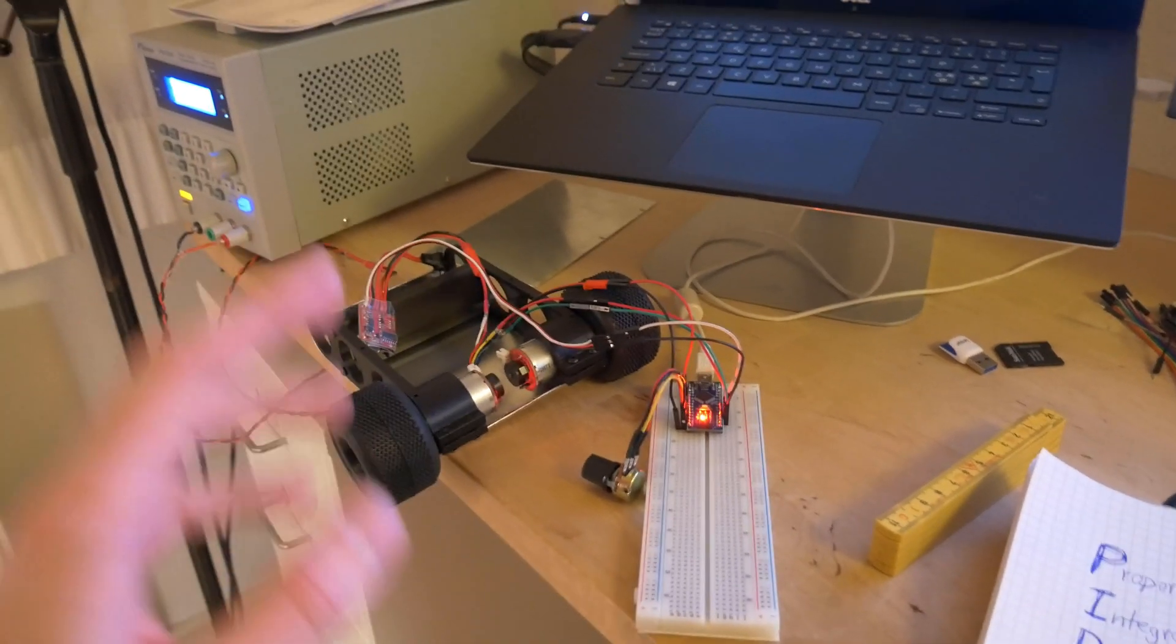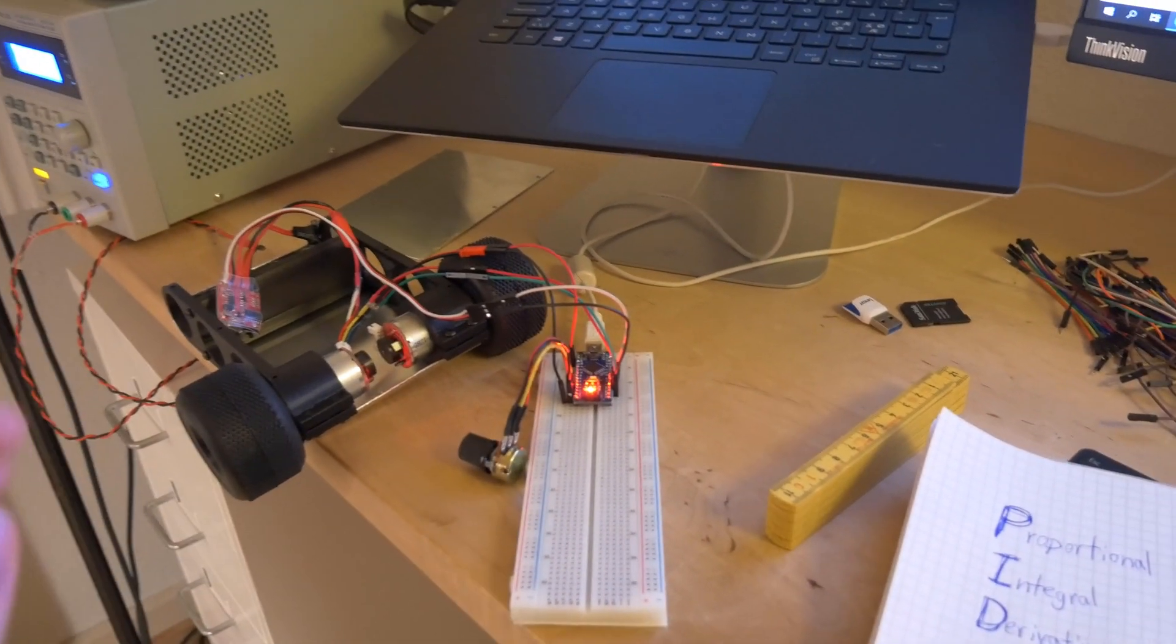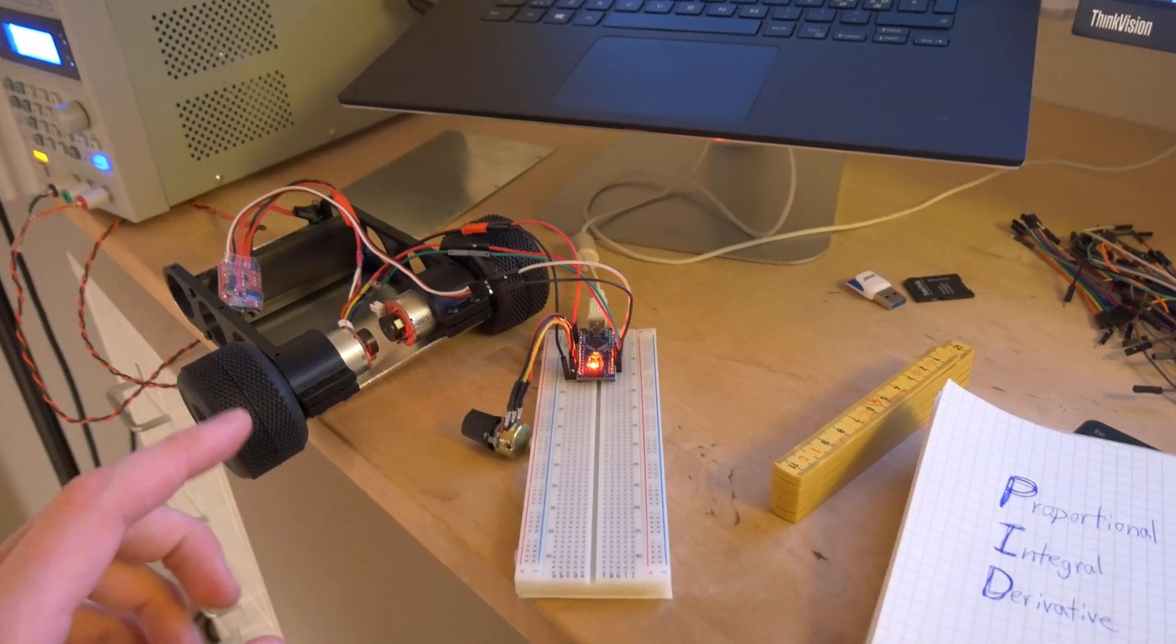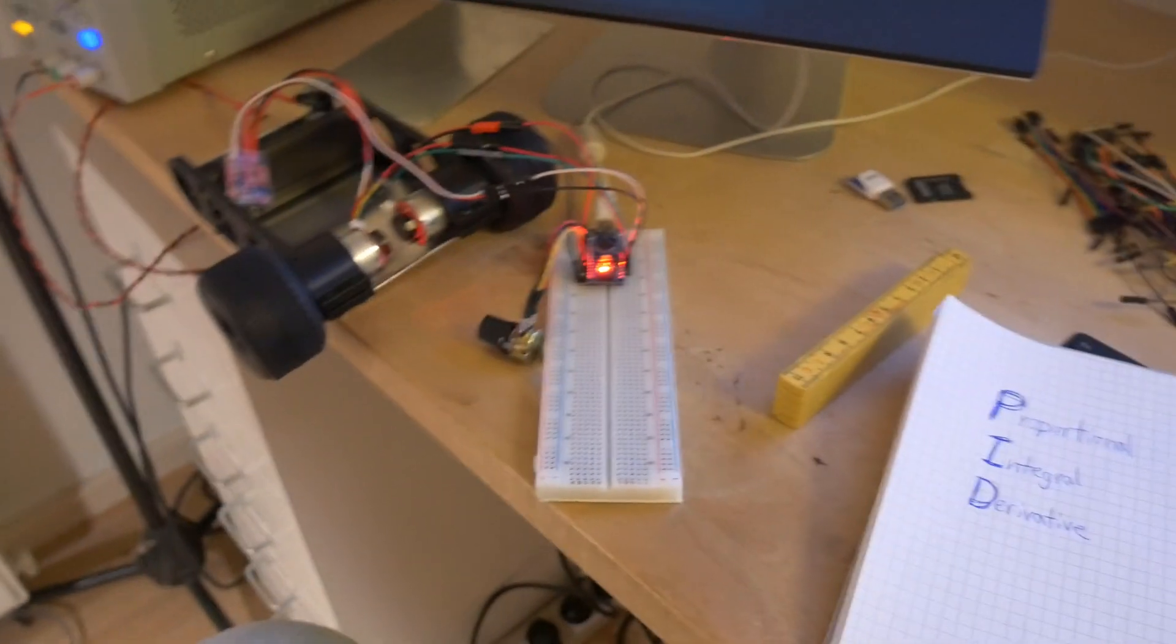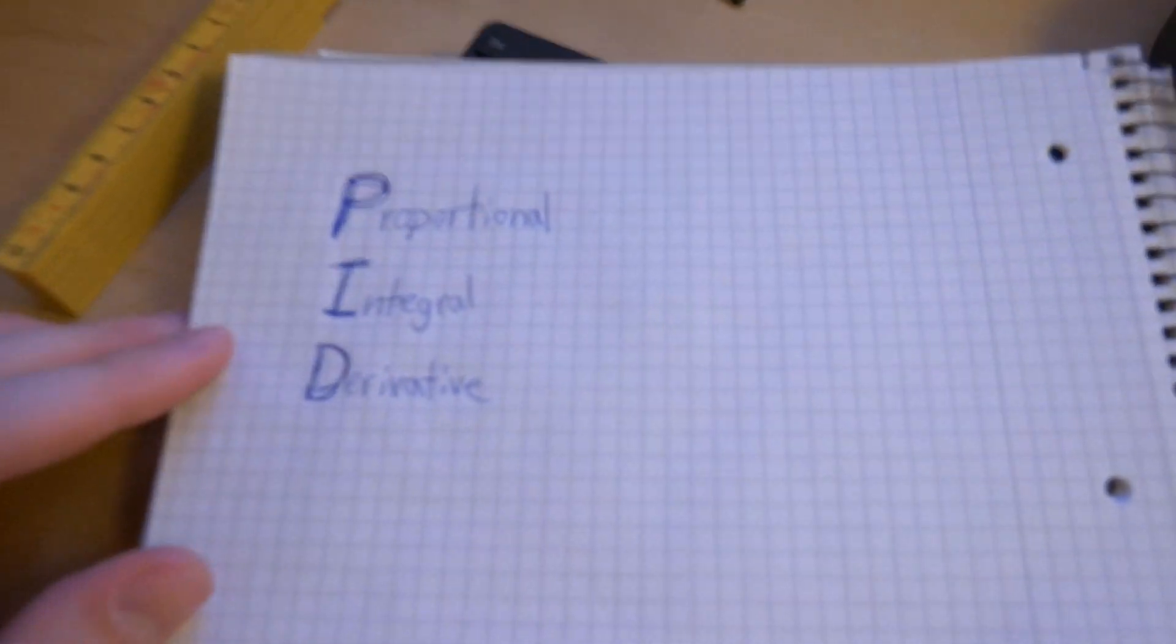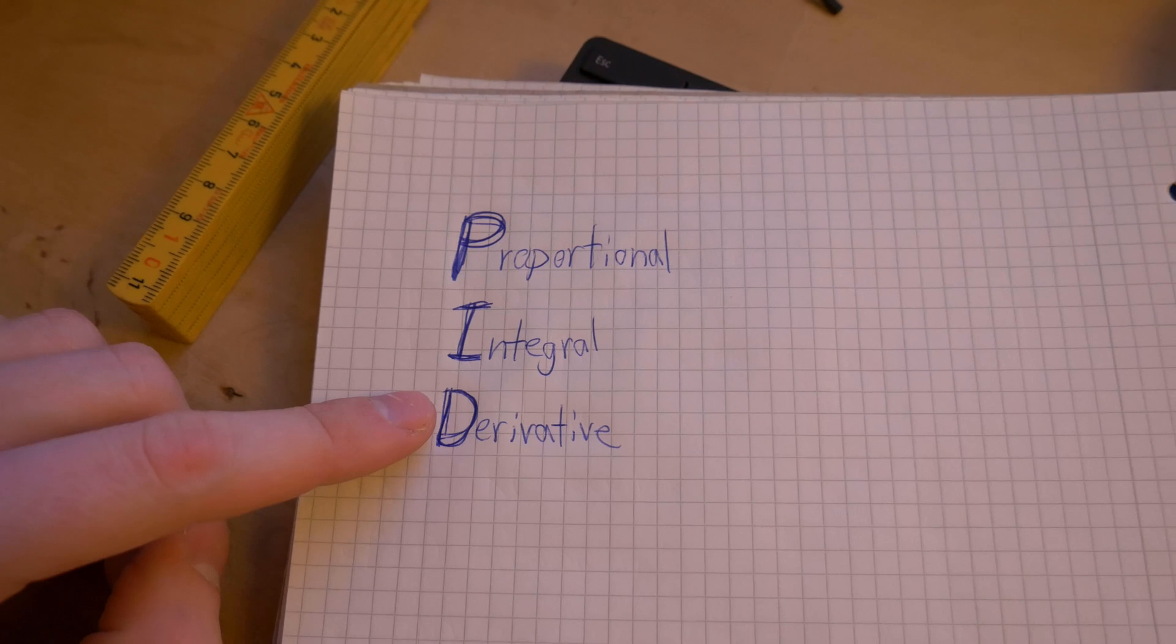I will be programming my own PID controller for this project. So therefore, to keep things simple, I will start by doing just a simple P controller. How does that work?